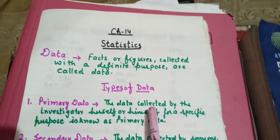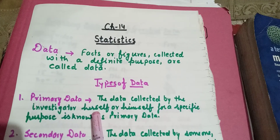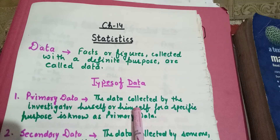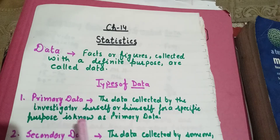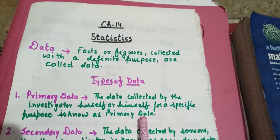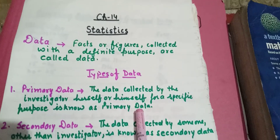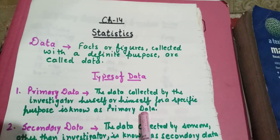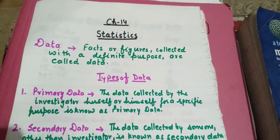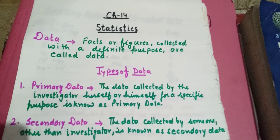The data collected by the investigator herself or himself for a specific purpose is known as primary data. That means the person who is going to use that data is collecting the data himself — then the data is called primary data.